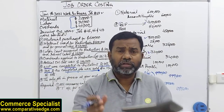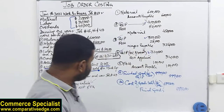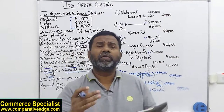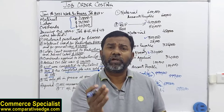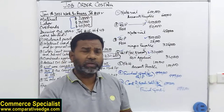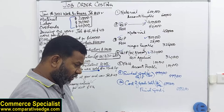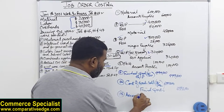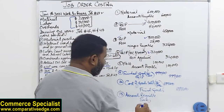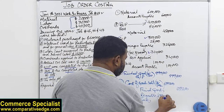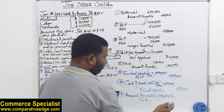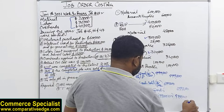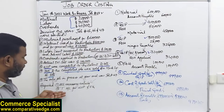First we record the cost of goods sold, then we record the sales value. The completed jobs were sold at a markup of 40%, so we add 40% to the cost — or simply multiply by 1.4. Entry 7B: since nothing else is stated, we sell on credit, so debit accounts receivable and credit sales. The selling price is 699,300 × 1.4 = 979,020.